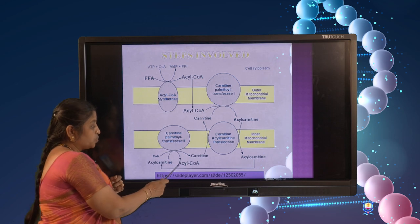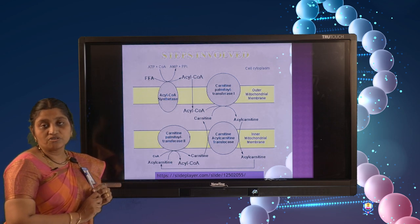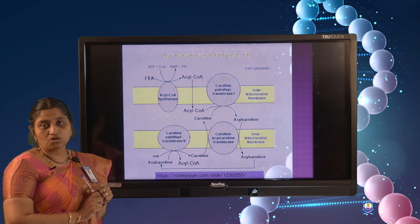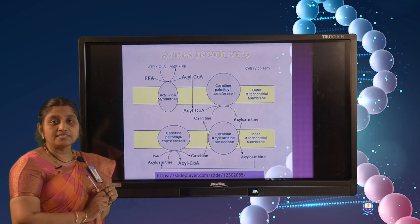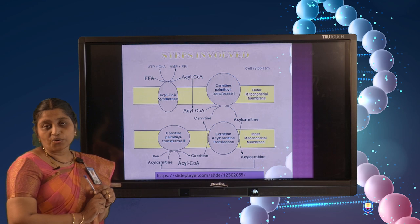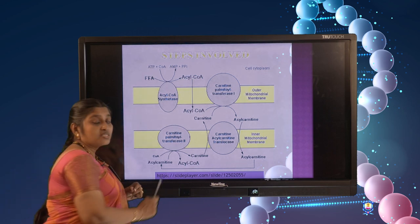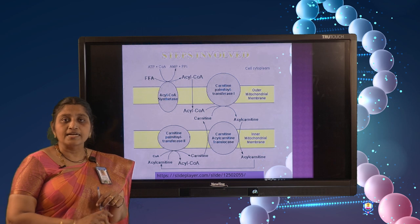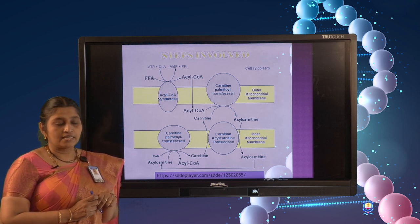Ultimately, acyl-CoA is now present in the mitochondrial matrix and is ready for subsequent beta oxidation, by which energy can be produced for the cells.